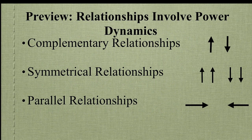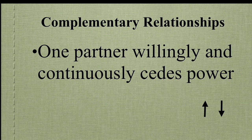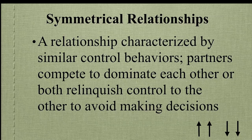Relationships involve power dynamics. There are complementary relationships, symmetrical relationships, and parallel relationships. In complementary relationships, one partner willingly and continuously cedes power — for example, deciding we are having Chinese food tonight and Italian tomorrow night. Symmetrical relationships are characterized by similar control behaviors, where partners compete to dominate each other or both relinquish control at the same time to avoid making decisions — for example, saying 'I don't know where you want to go eat, so I'm just going to let you decide.'